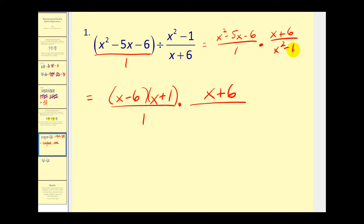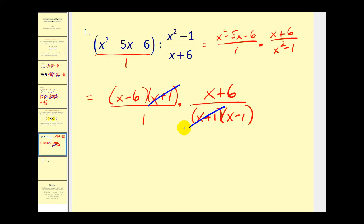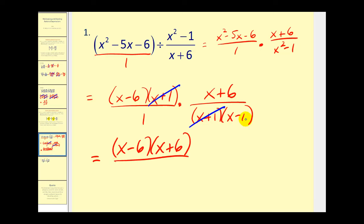x squared minus one is a difference of squares, so we have x plus one times x minus one. Now we simplify. We have a factor of x plus one on top and x plus one on the bottom — that simplifies. So we're left with x minus six times x plus six, all divided by the quantity x minus one.